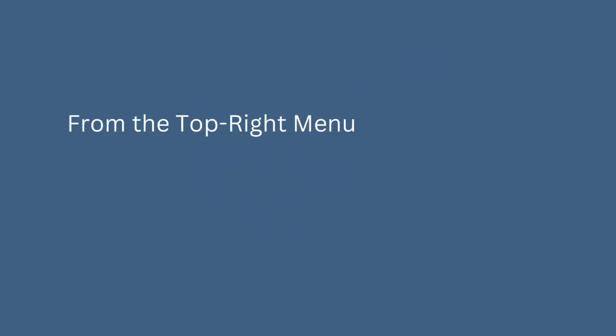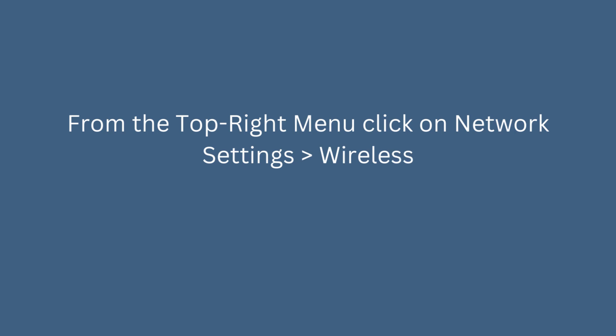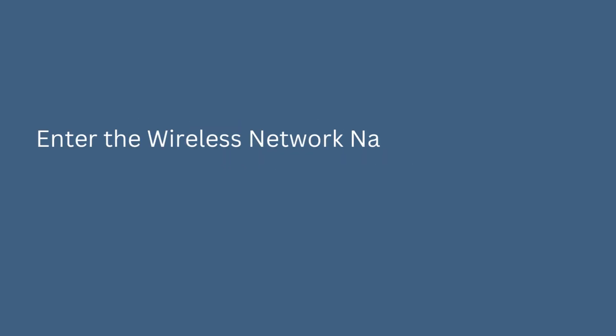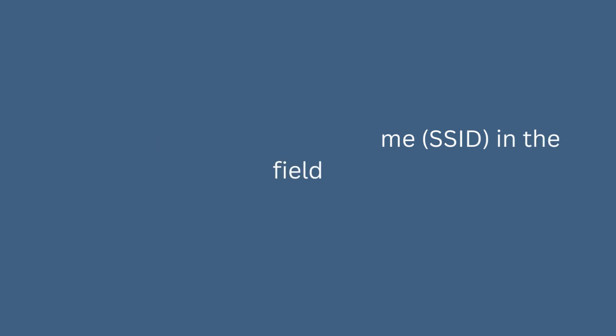From the top right menu, click on Network Settings, then Wireless. Enter the wireless network name (SSID) in the field.